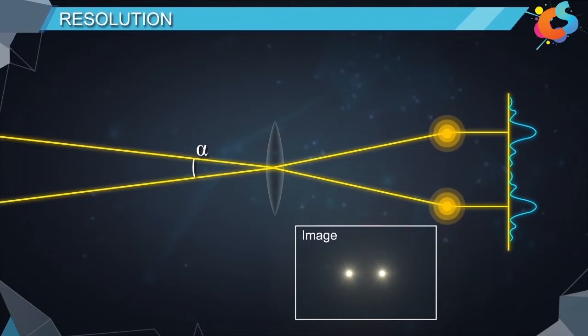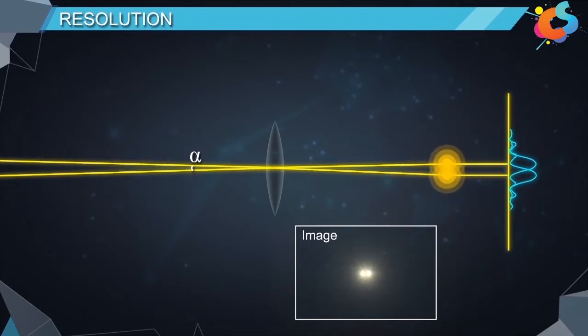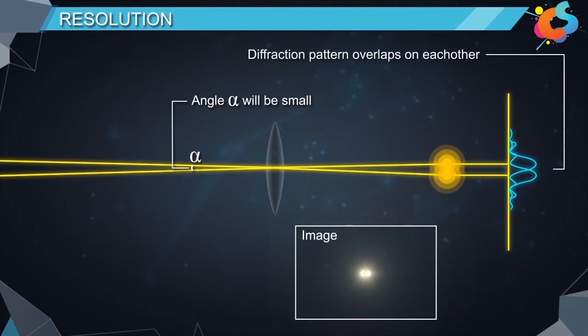But if the two stars are very close to each other, the angle alpha will also be very small. The diffraction patterns of both the stars will be so close that they overlap each other.